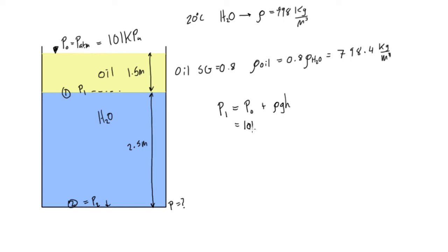but we're just going to say this is 101 kilopascals. So, we have 101,000 pascals plus, the first layer is oil. So, we have our density is 798.4 kilogram per cubic meter times 9.81 meters per second squared times H, that's going to be from the surface down to 1. That's the difference in height. It's going to be 1.5 meters.